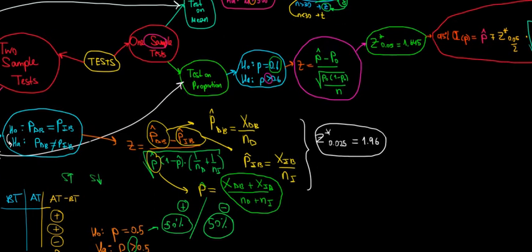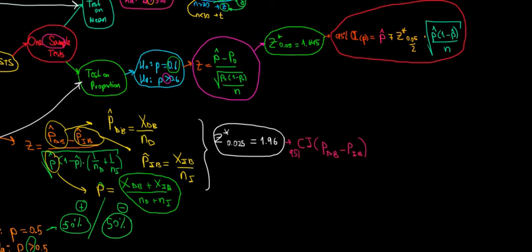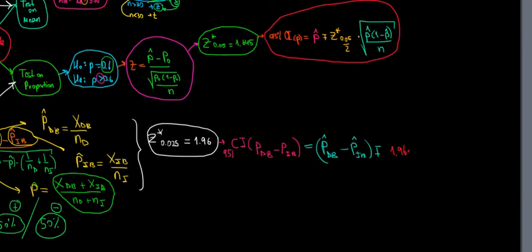Now let's design a confidence interval. For a 95% confidence interval on the difference between the population proportion of Dutch students that ride bicycles minus the population proportion of international students that ride bicycles, recall that our sample proportions are estimates of the population. We want to find the range of values that contains the true difference with 95% probability. We compute it as the sample proportion of Dutch students minus the sample proportion of international students, plus or minus 1.96 multiplied by the standard error.